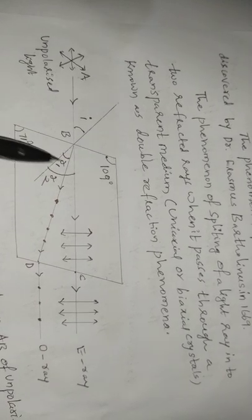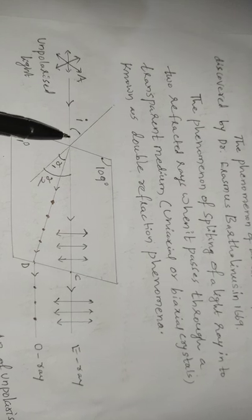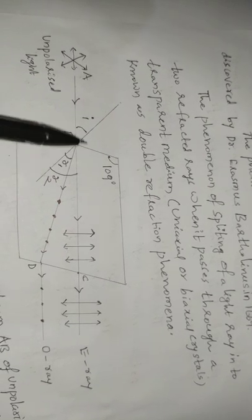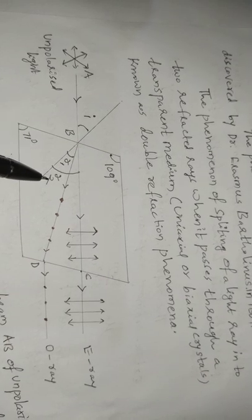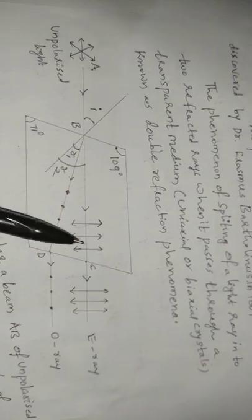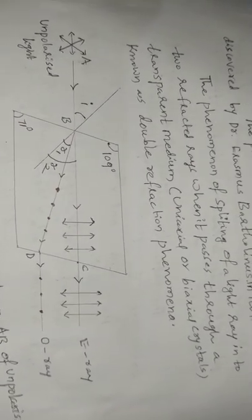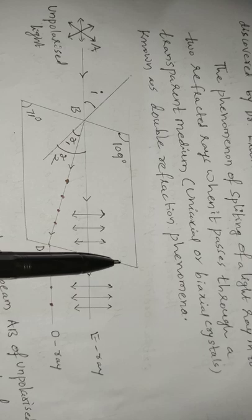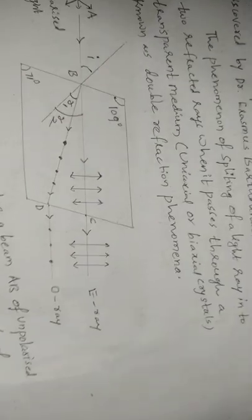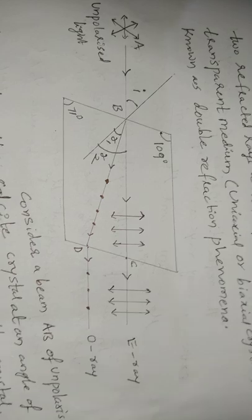The ordinary ray moves along direction BD, making an angle of refraction r1, while the extraordinary ray moves along direction BC, making an angle of refraction r2. After emerging from the crystal, both rays move parallel to each other because the two opposite faces of the crystal are parallel. Both the extraordinary ray and ordinary ray are plane polarized — this is the double refraction phenomenon.